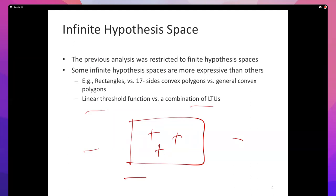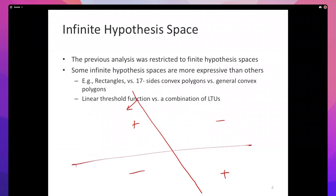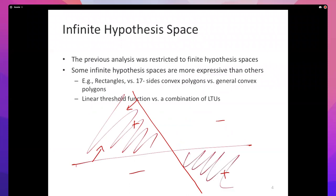Say learning algorithm one was allowed to use rectangles, and learning algorithm two was allowed to use 17-sided convex polygons. 17-sided convex polygons can maneuver better around the space — maybe it is more expressive. Another example you've already encountered is with linear classifiers. A linear classifier cannot express an XOR function: if you have plus, minus, minus, plus, you cannot draw a line that separates both pluses from the minuses. But if you're allowed to use two lines and say this side is plus and this side is plus, the intersection perfectly separates the pluses from the minuses. So a combination of linear threshold units is more expressive than a single linear threshold unit, and both of them are infinite sets.